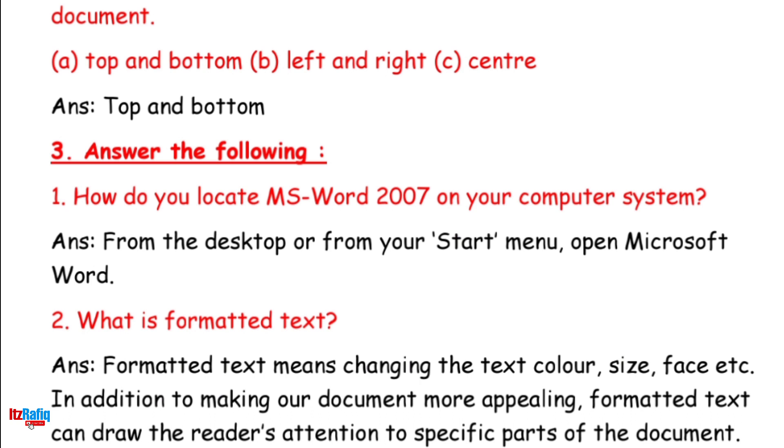2. What is formatted text? Answer: Formatted text means changing the text color, size, face, etc. In addition to making a document more appealing, formatted text can draw the reader's attention to specific parts of the document.